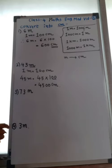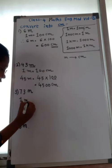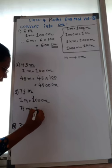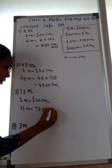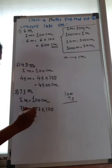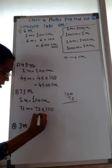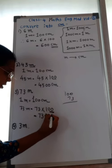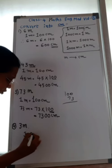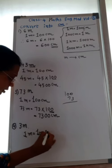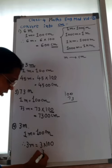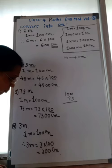Third question: 73 meter. Again, 1 meter equals 100 centimeter. So, 73 meter equals 73 multiplied by 100. 73 ones are 73, and we put 2 zeros — answer is 7,300 centimeter. The last question is 3 meter. 1 meter equals 100 centimeter, so 3 meter equals 3 multiplied by 100 — 3 ones are 3, put 2 zeros — answer is 300 centimeter. Write the unit.